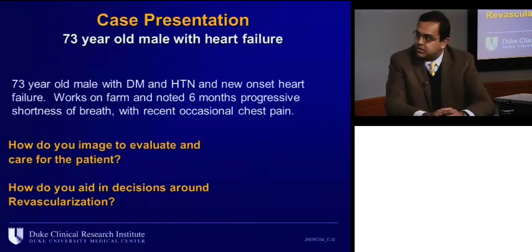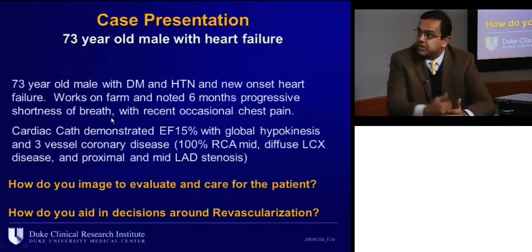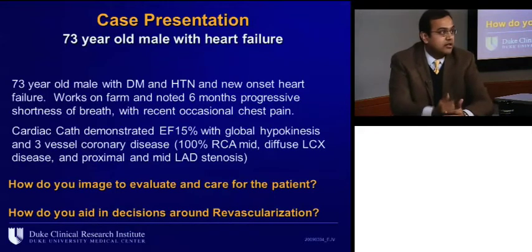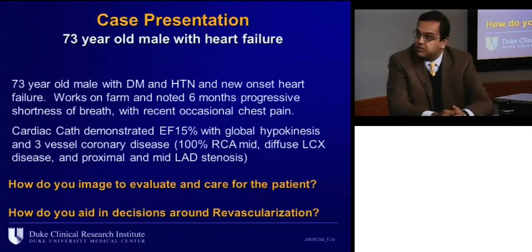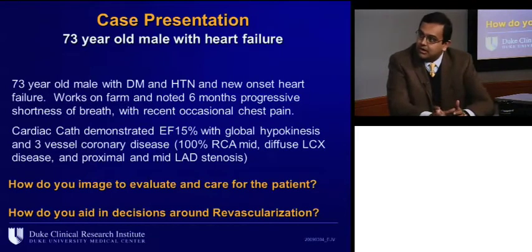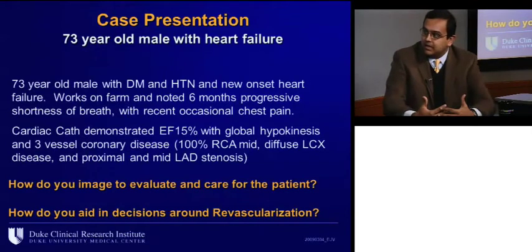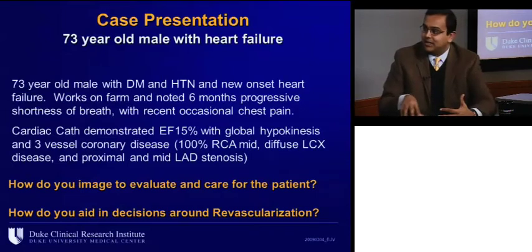We eventually did a heart catheterization, and at coronary catheterization we found that his ejection fraction was 15% with global hypokinesis. The left ventricular end-diastolic pressure was elevated at 20 millimeters mercury or more. He had three-vessel coronary disease — fairly complex — with a 100% right coronary lesion, diffuse circumflex disease, and both proximal and mid-LAD disease. So we have a gentleman who is 73 with a depressed ejection fraction, symptomatic heart failure on first presentation, and we need to use imaging and make revascularization decisions.